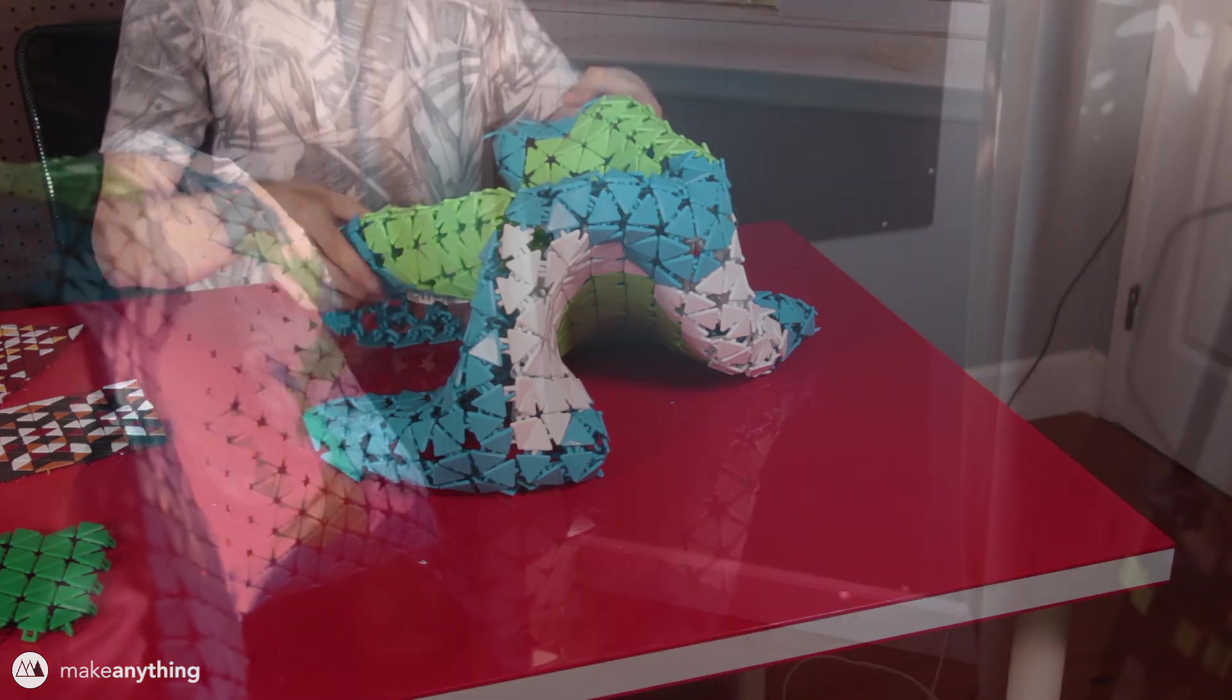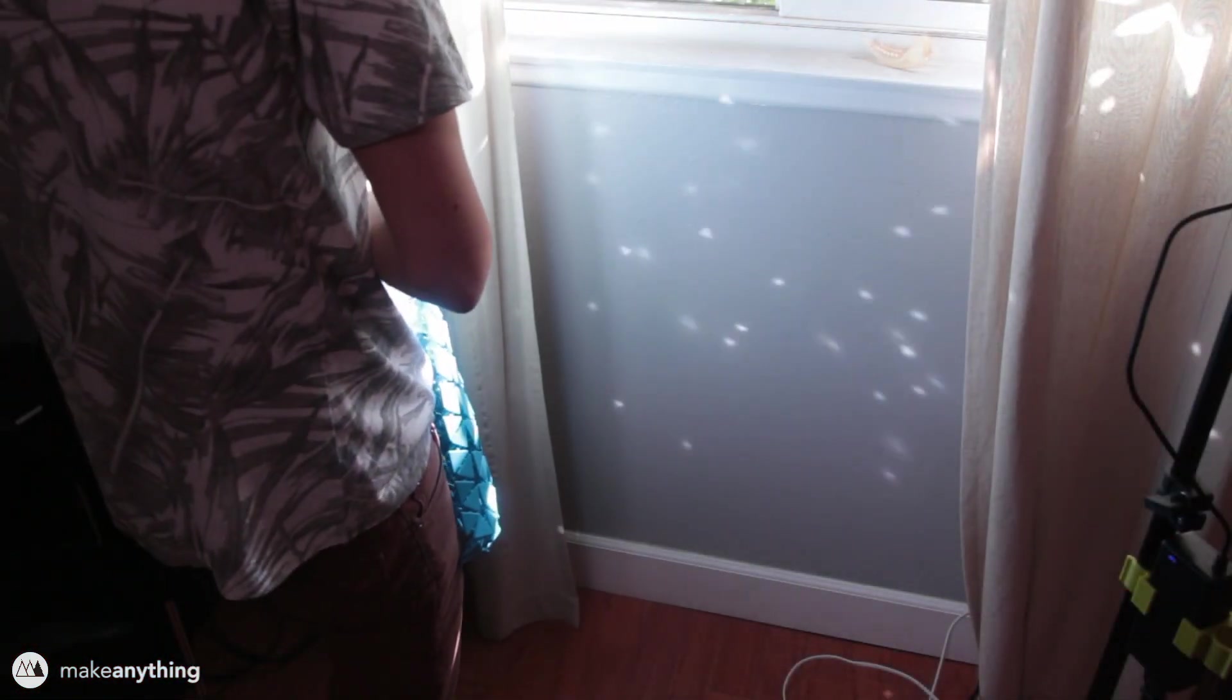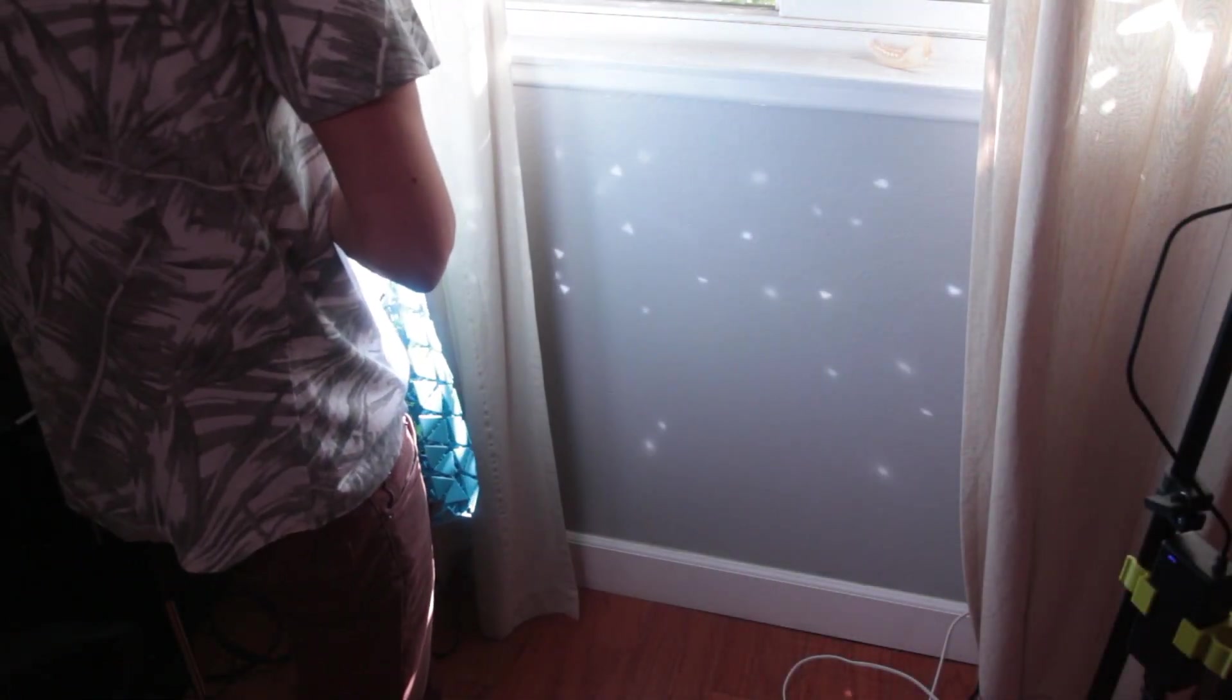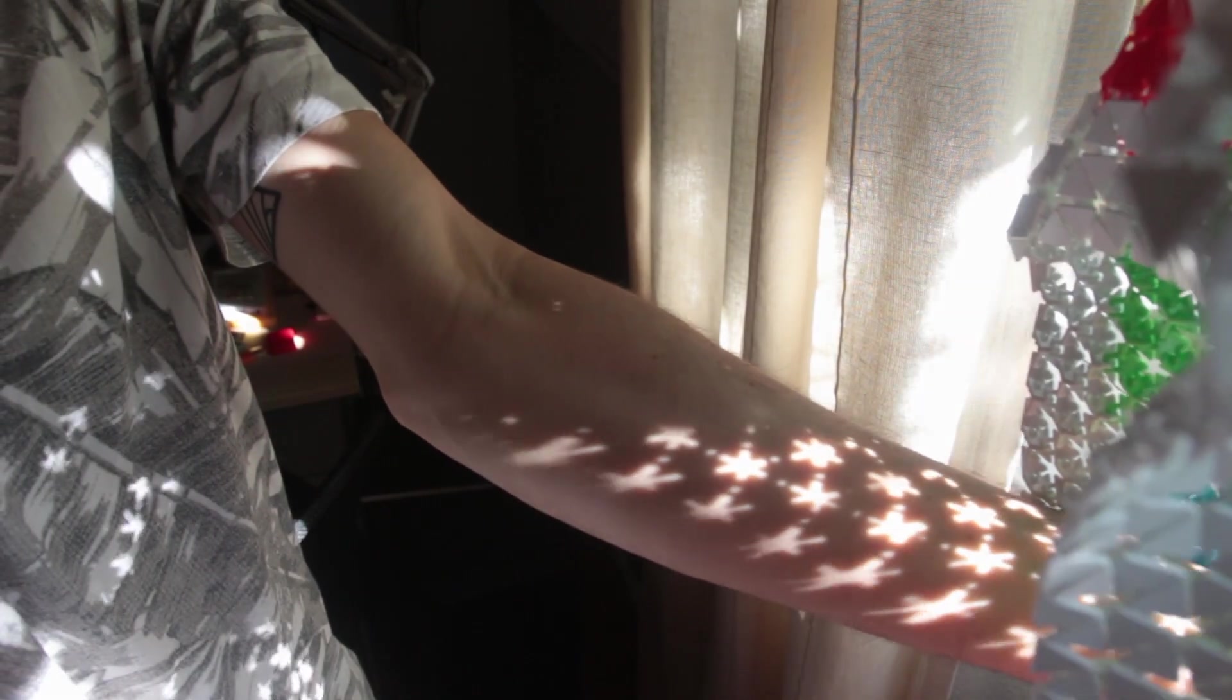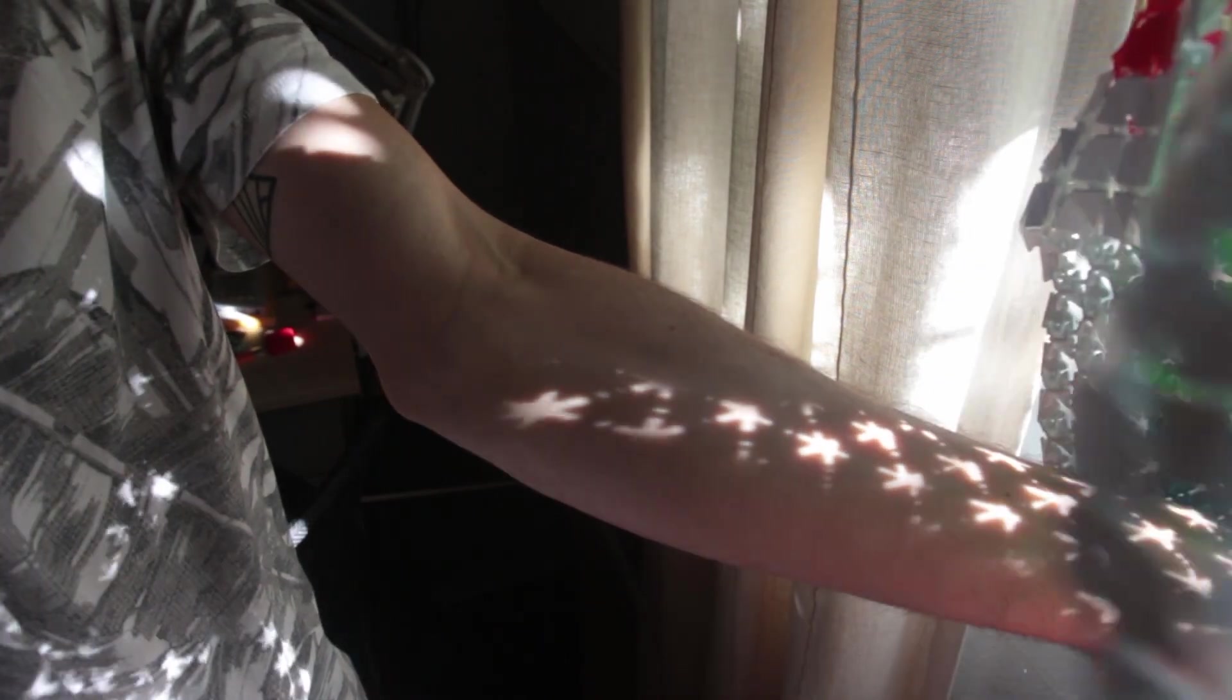I also noticed that this fabric scatters light in a really cool way when the sun hit it through the window and I had all these little triangles dancing around my room. It also casts a really cool shadow so this stuff has all kinds of interesting properties that are going to be really fun to play around with.